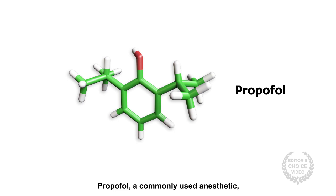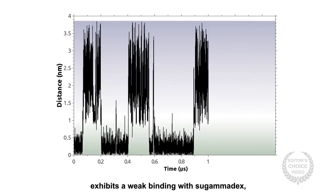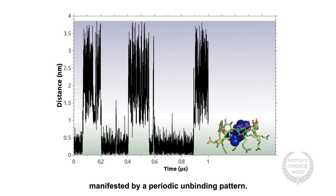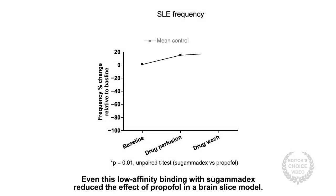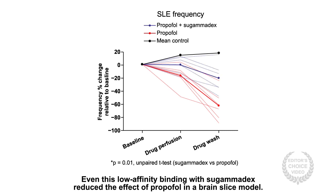Propofol, a commonly used anesthetic, exhibits weak binding with Sugammadex, manifested by a periodic unbinding pattern. Even this low-affinity binding with Sugammadex reduced the effect of propofol in a brain-slice model.